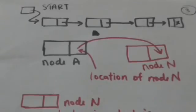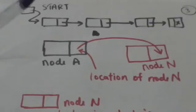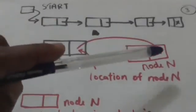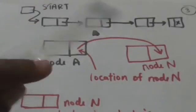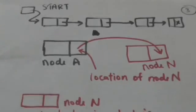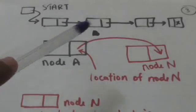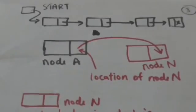If node N is to be inserted after node A in the linked list, then the value of the next pointer field of node A is assigned to the next pointer field of node N, so that node N points to the node following node A. After this, the location of node N is assigned to the next pointer field of node A, so that node A points to node N.